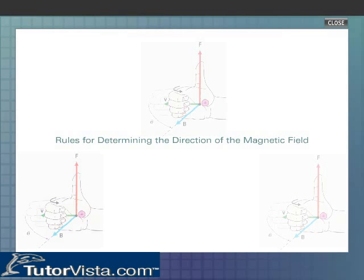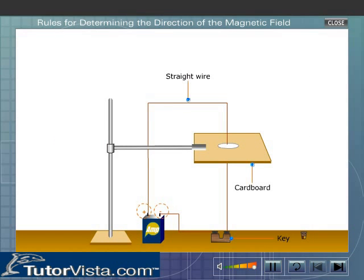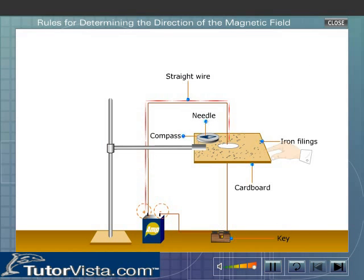Rules for Determining the Direction of the Magnetic Field. Observe the direction of the compass needle when current passes through a straight wire carrying current.